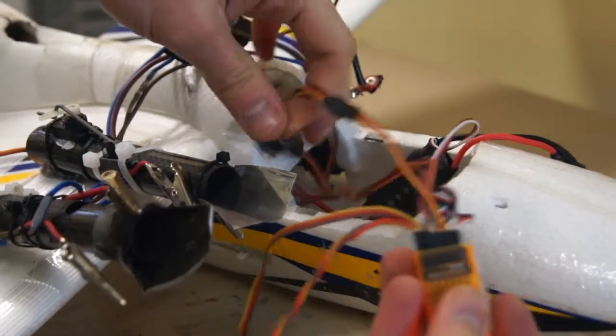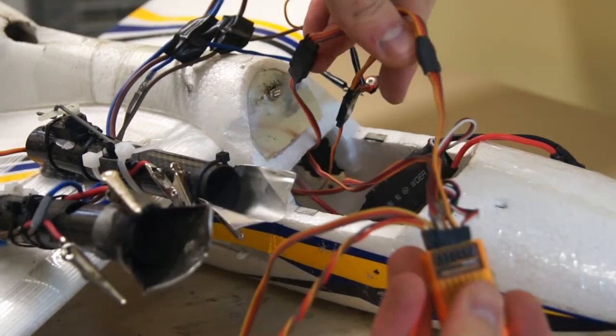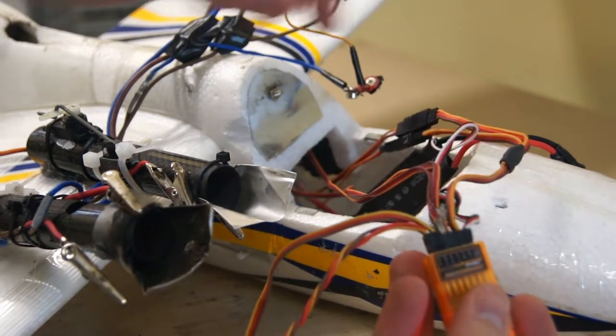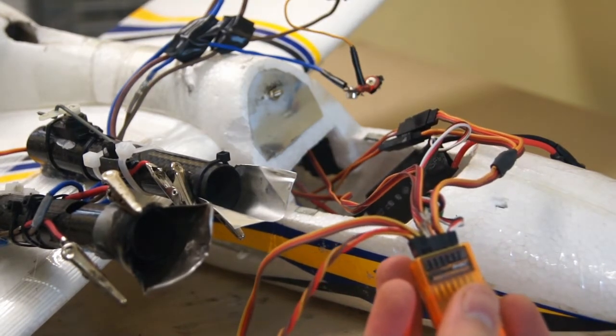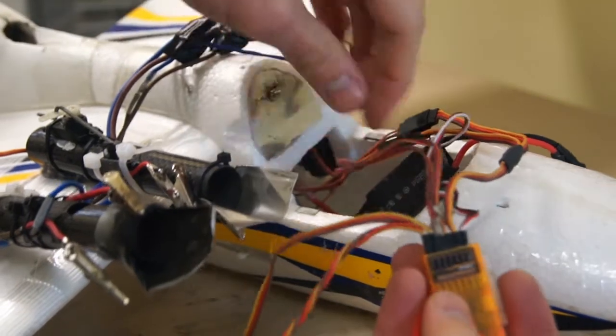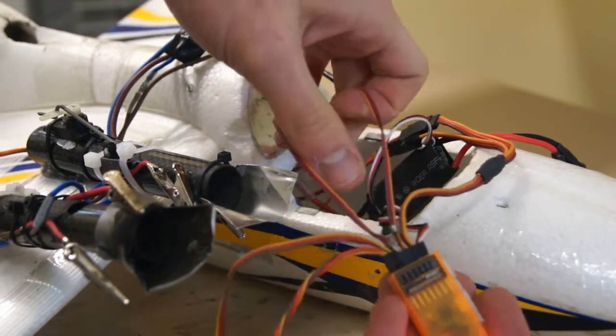I connected the two aileron servos with a wire harness and plugged it into the aileron port in my receiver. I connected the rudder and the elevator servos as normal.